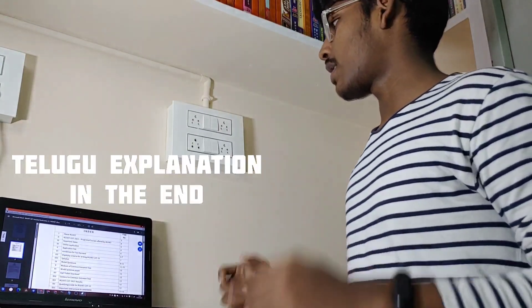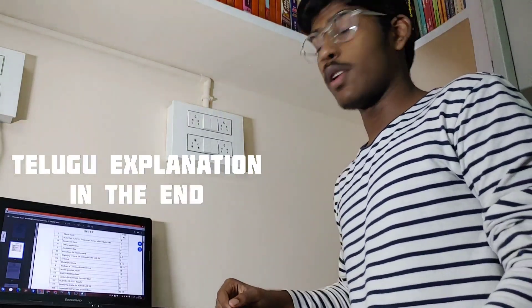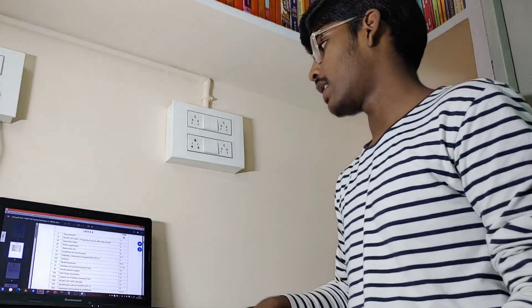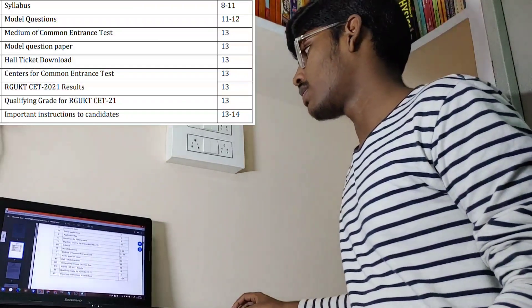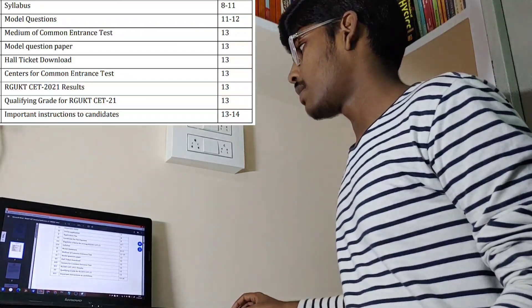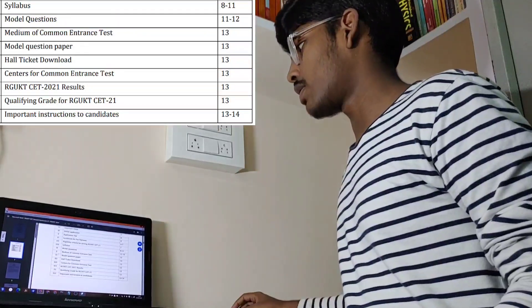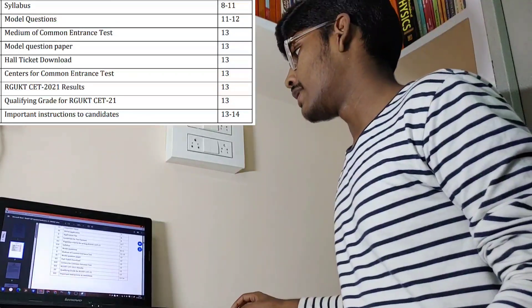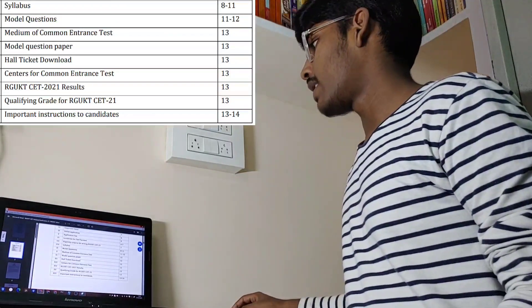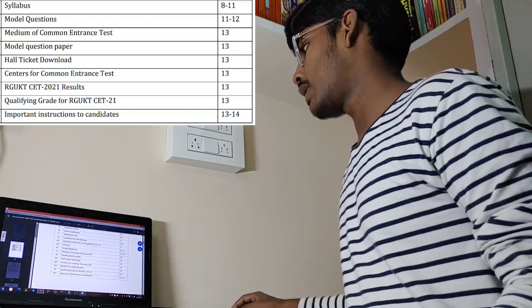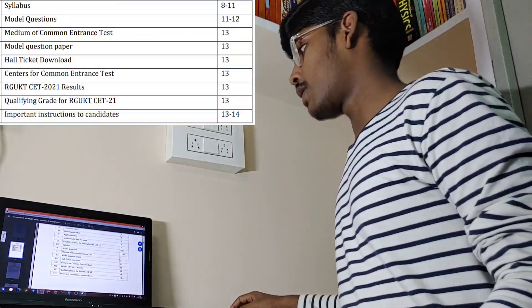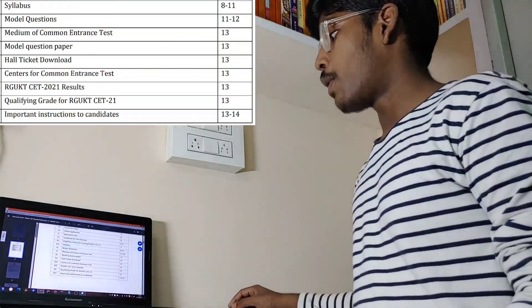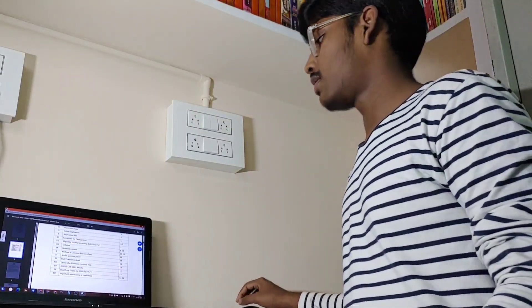Coming to the index: in the previous video we discussed from RGKT to the eligibility criteria. Today we're going to discuss the syllabus, model questions, medium of common entrance test, model question paper, hall ticket, download centers for common entrance test, RGKT SET 2021 results, qualifying rate for RGKT SET 21, and the last one — important instructions to candidates.